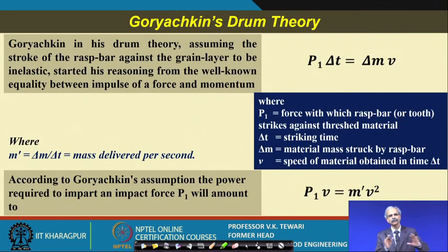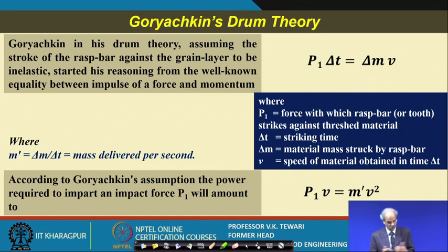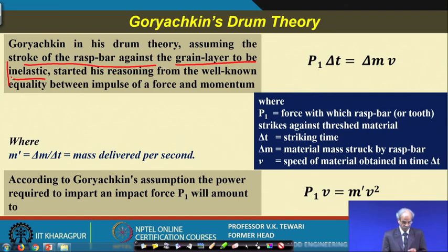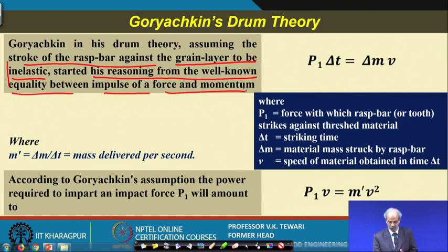Goryachkin also developed a drum theory. Assuming that the strokes of the rasp bar against the grain layer are inelastic — meaning there is no elasticity — and starting from the well-known equality between impulse of a force and momentum: P_i · Δt = Δm · v, where P_i is the impact force, Δt is the striking time, Δm is the material mass struck by the rasp bar, and v is the speed of the material obtained in time Δt.